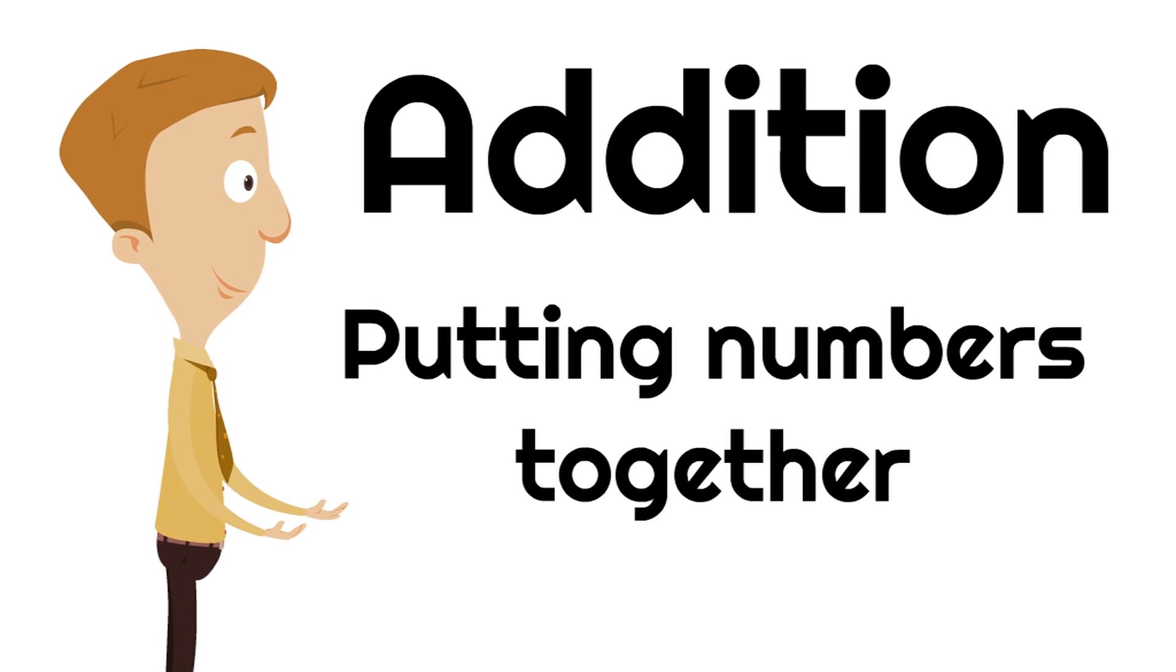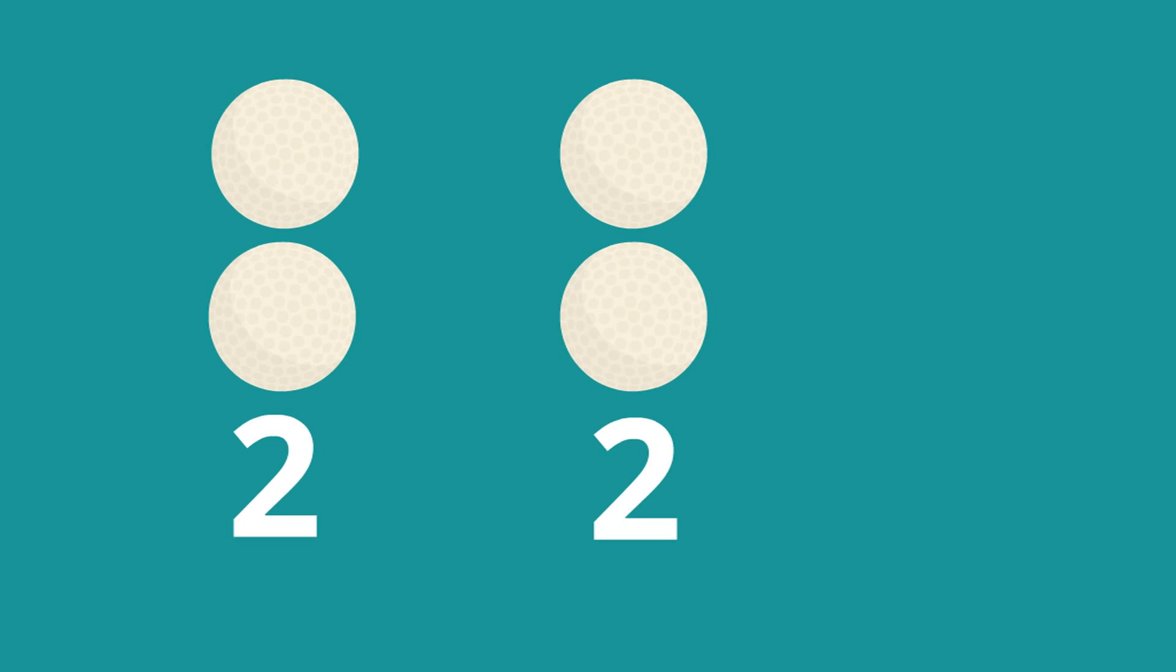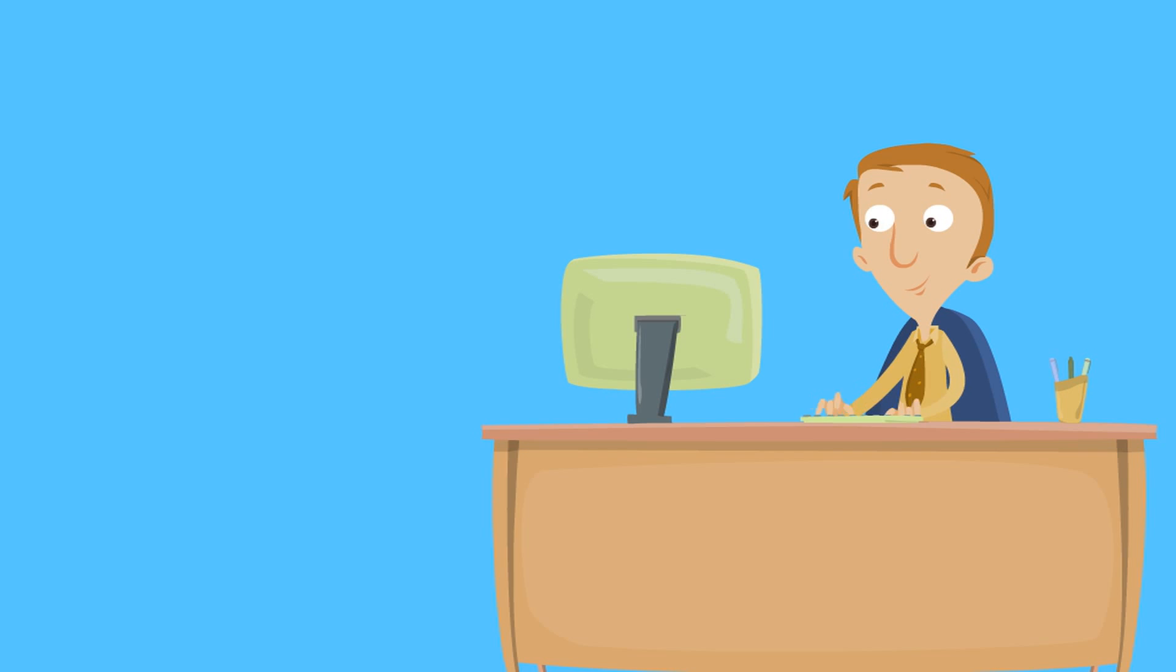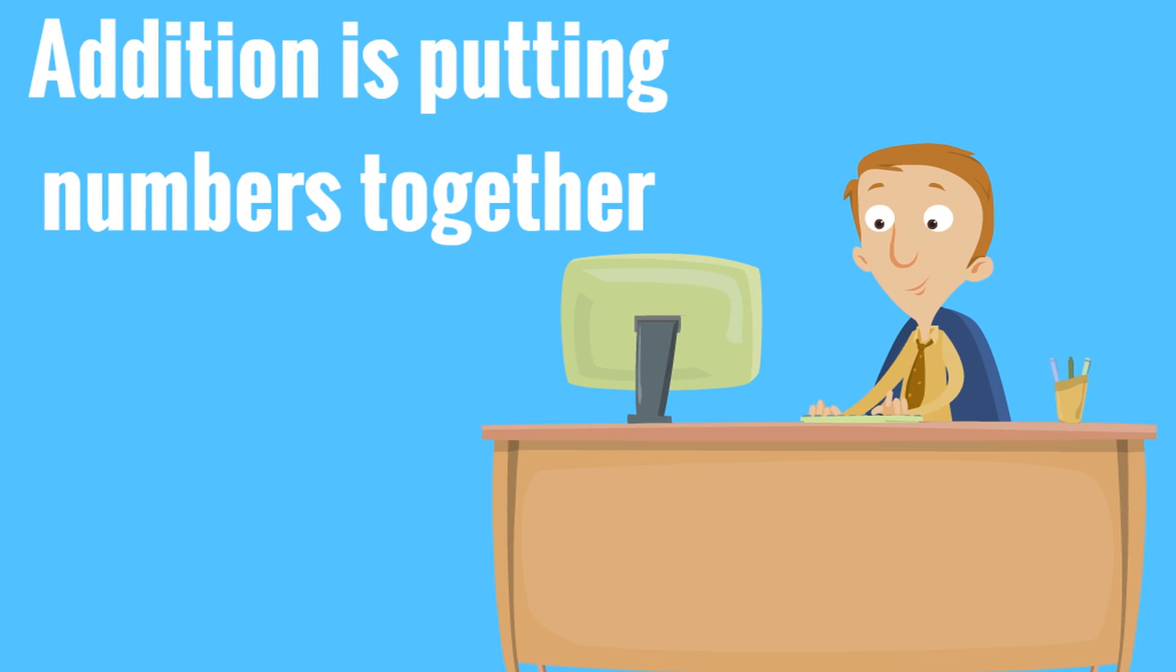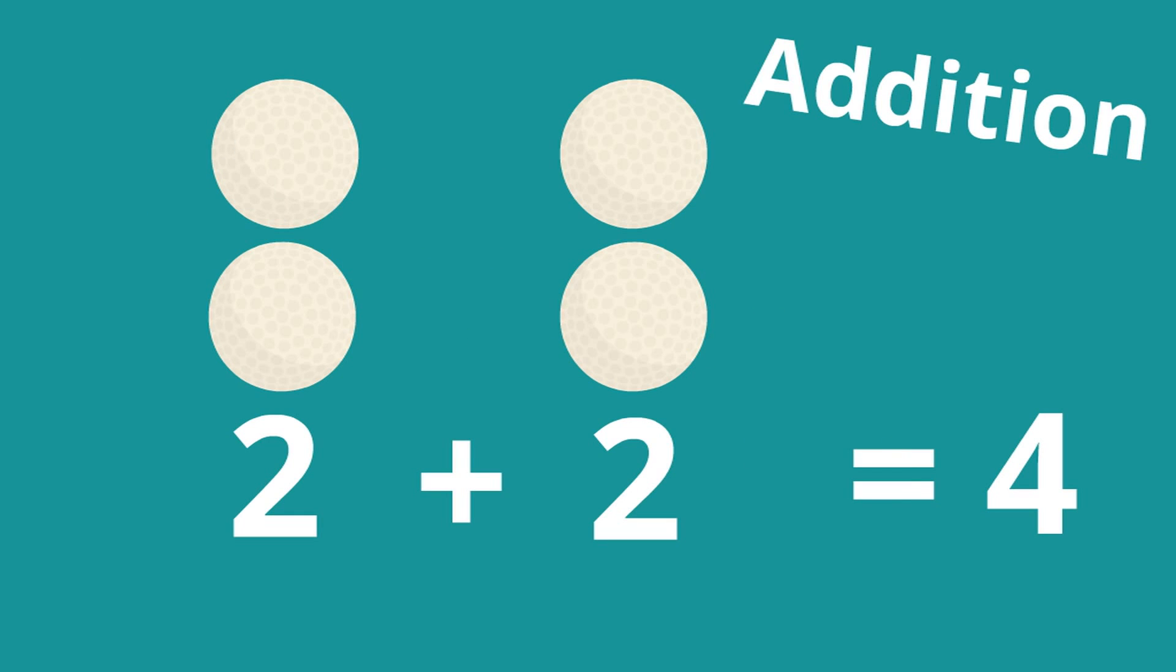So she had two balls, and she's found two new ones, so we need to find out what two plus two is. What a great addition problem. If you don't know, you can actually just count the golf balls. What's two plus two? Yeah. Four. Two plus two equals four. Remember, addition is putting numbers together. Two plus two equals four. That's addition. Putting numbers together.